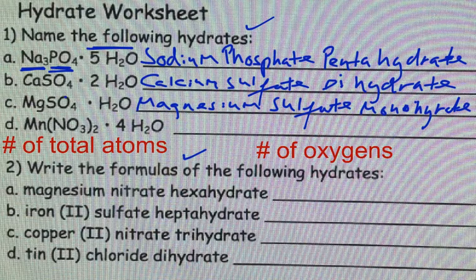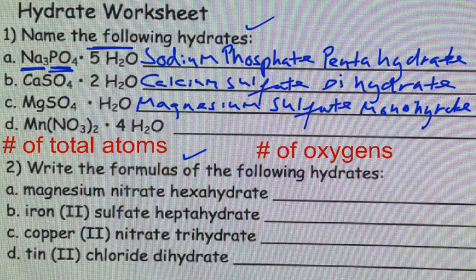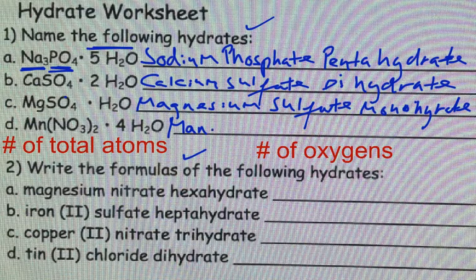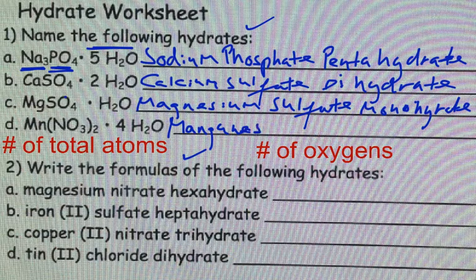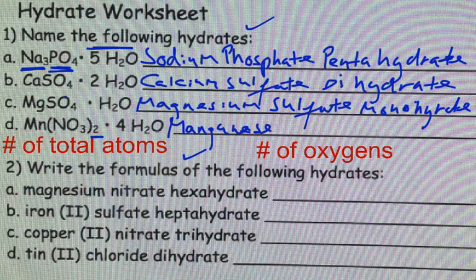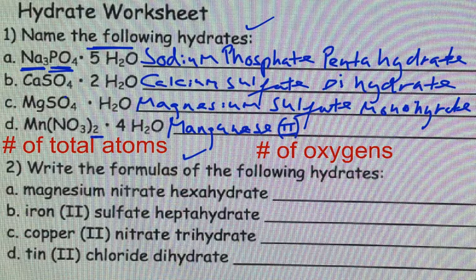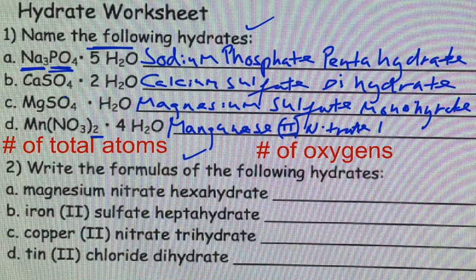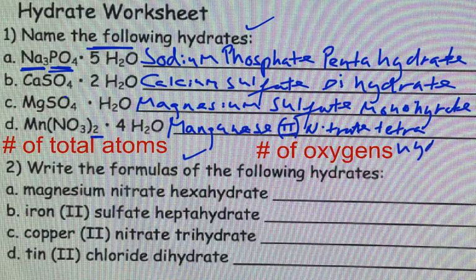And if it only has one water, it will be monohydrate. And Mn, NO3, parentheses, 2. Mn is manganese. Now, if I'm not mistaken, manganese has more than one oxidation state. Reverse crisscross works in this example right here. So it will be manganese, roman numeral 2, nitrate tetrahydrate. And that will be those guys.